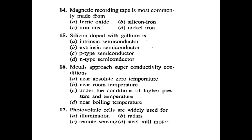Question 14: Magnetic recording tape is most commonly made from — ferric oxide, silicon iron, iron dust, or nickel iron? Answer: ferric oxide. Silicon doped with gallium is — intrinsic semiconductor, extrinsic, p-type, or n-type? It is a p-type semiconductor. Question 14: Metals approach superconductivity conditions near absolute zero temperature, near room temperature, under high pressure and temperature, or near boiling temperature? Answer: near absolute zero temperature.